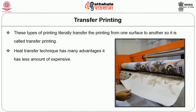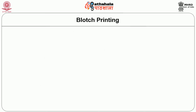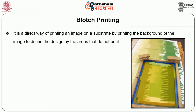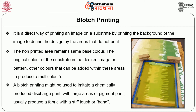Heat transfer technique has many advantages: it involves a less expensive amount of printing, is much faster, and can produce large amounts of fabric in very little time. Blotch printing is a direct way of printing an image on a substrate by printing the background of the image to define the design by the area that does not print; the non-printed area remains the same base color — the original color of the substrate — in the desired image or pattern. Other colors can be added within these areas to produce multi-colors. Blotch printing may be used to imitate a chemically produced discharge print.